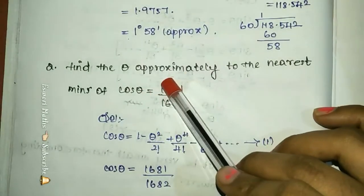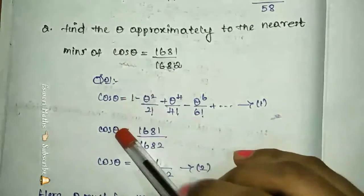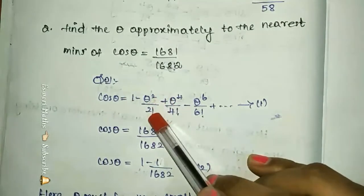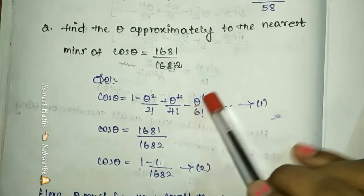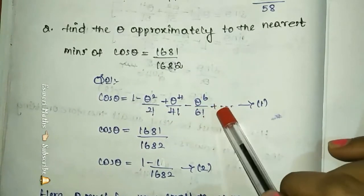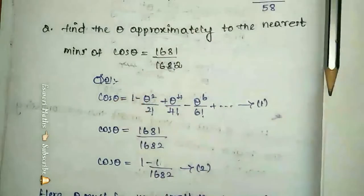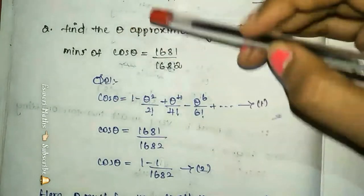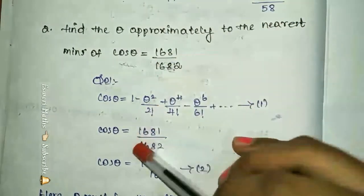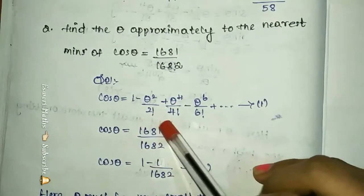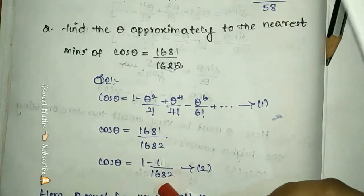We are finding the angle to the nearest minutes. The cosine series formula is: cos theta equals 1 minus theta square by 2 factorial plus theta to the power 4 by 4 factorial minus theta to the power 6 by 6 factorial, and so on. Now cos theta equals 1681 divided by 1682. How do we write this value? As 1 minus 1 by 1682.